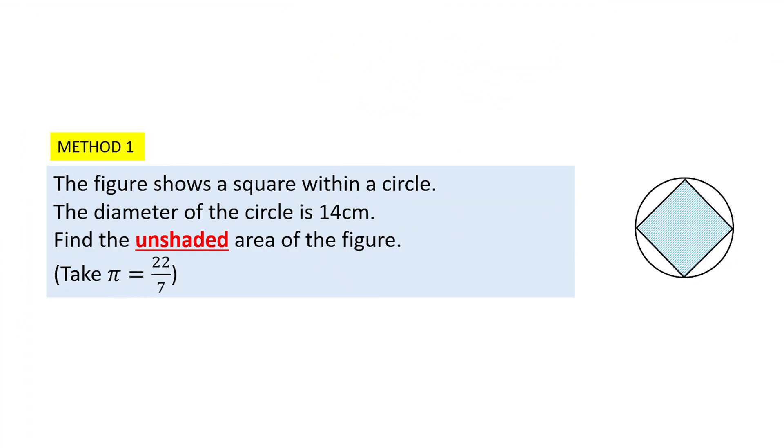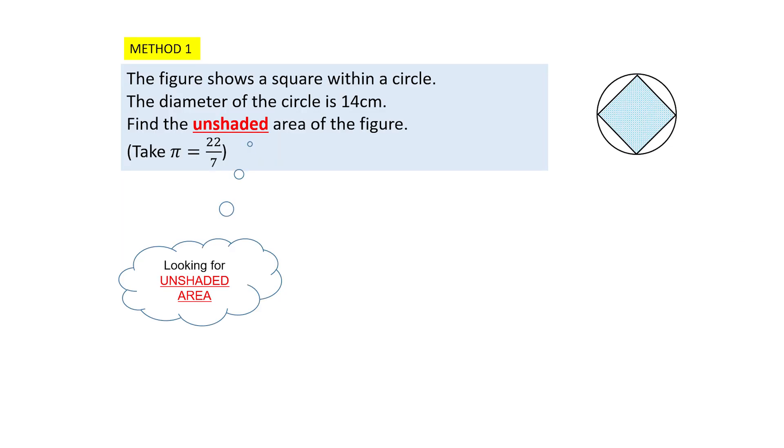Let's take a look at this question. It looks like the Chinese coin, which has a square in the middle of the circle. However, this square is actually touching the circumference of the entire circle. The figure shows a square within a circle and the diameter of the circle is 14 cm. And you are required to find the unshaded area of the figure.